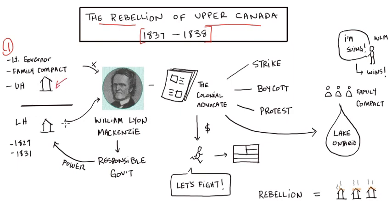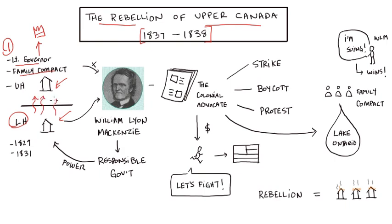The upper house is controlled largely by the Family Compact and the lieutenant governor, who answers to the monarchy. The legislative assembly is elected by people in the colonies, and because of the veto power of the upper house, the lower house becomes angry and upset with the lieutenant governors over time, and also with the Family Compact.